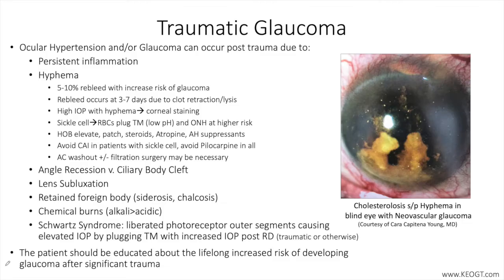Traumatic glaucoma is any form of glaucoma that results directly from injury to the eye. Some causes include blunt trauma with direct damage to the aqueous outflow system, penetrating injuries leading to disruption of tissues with inflammation and scar formation, retinal detachment with subsequent plugging of the trabecular meshwork with blood or inflammatory cells, and bleeding with compromise of the outflow system, as well as exposure to caustic substances.